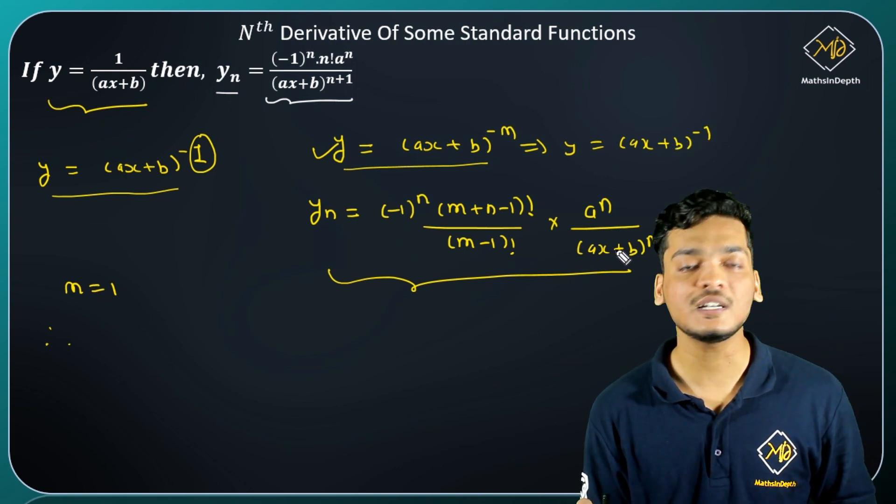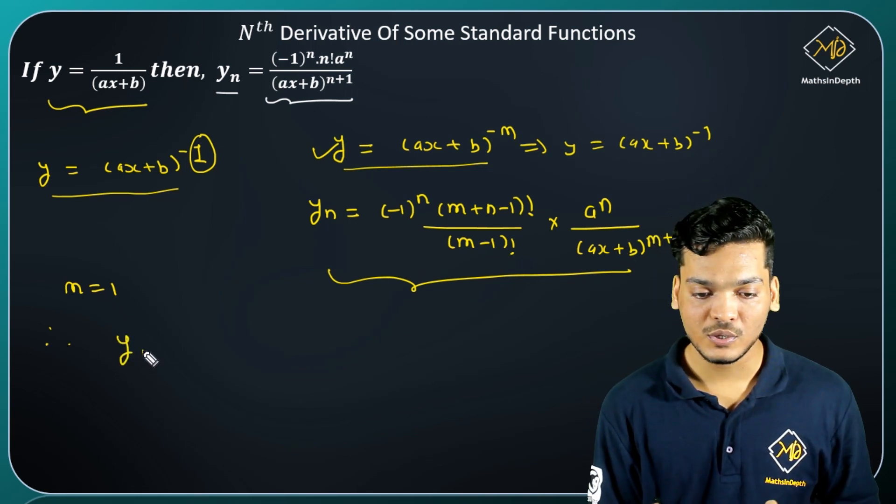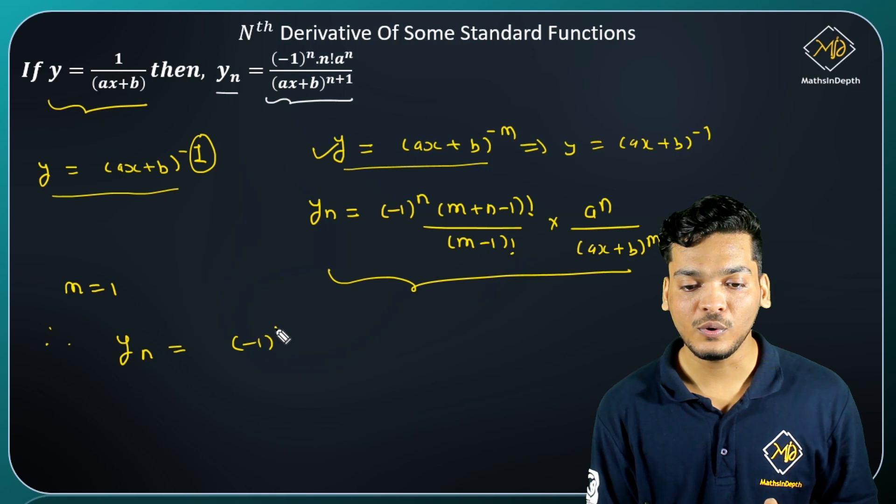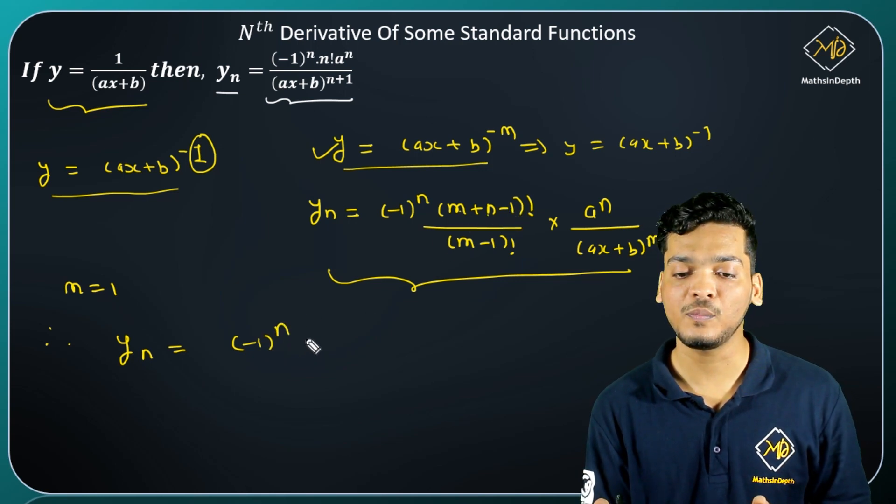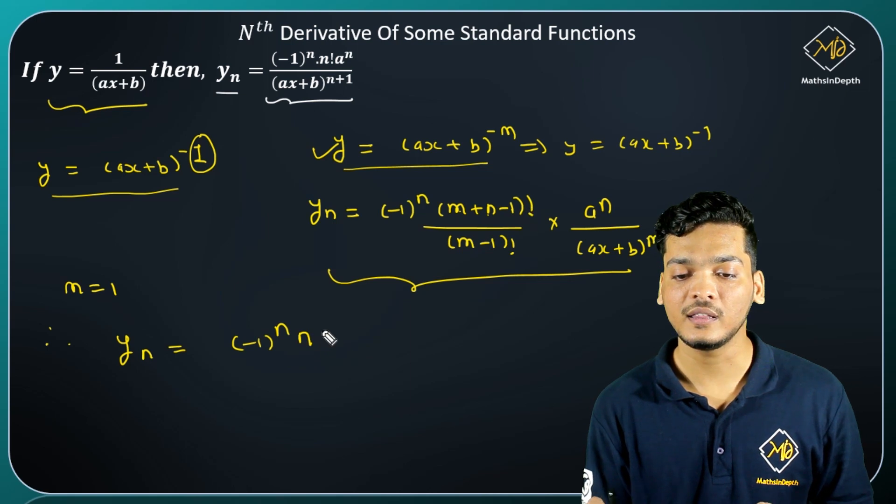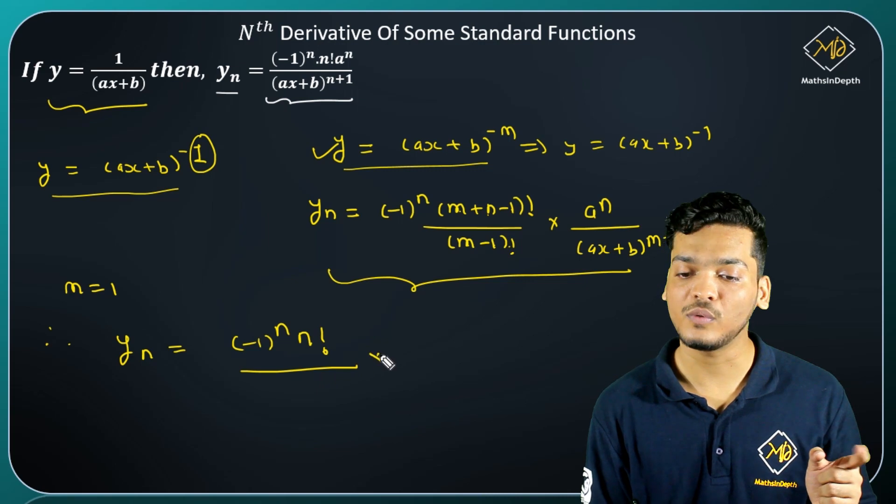This derivative is 1. Therefore, yn will be equal to minus 1 raised to n. Then 1 minus 1, 0. 0 factorial is 1.